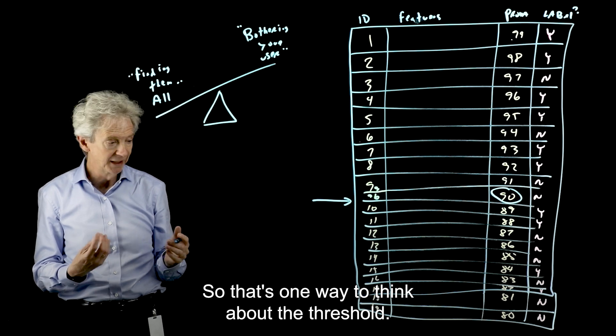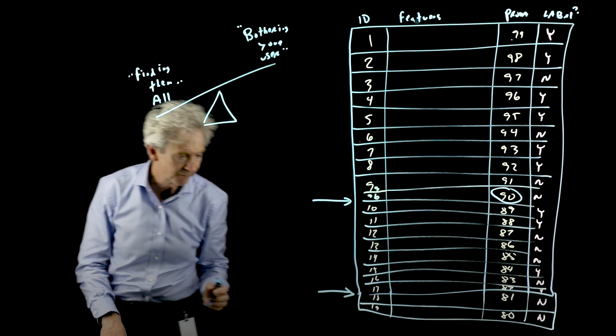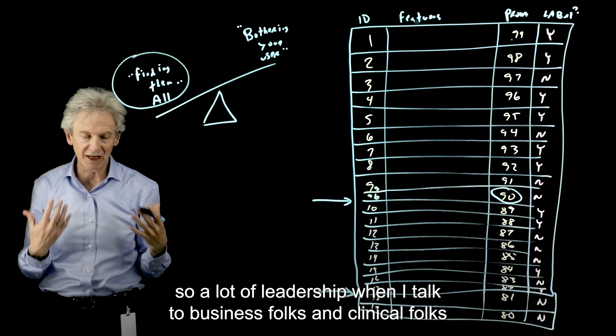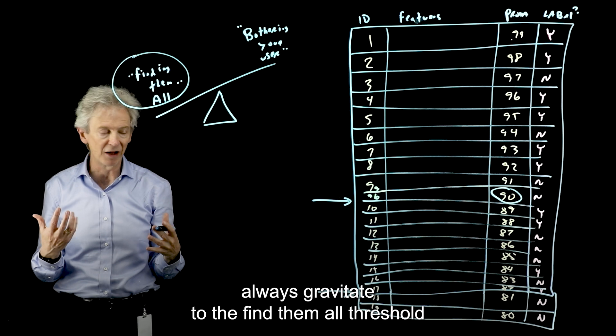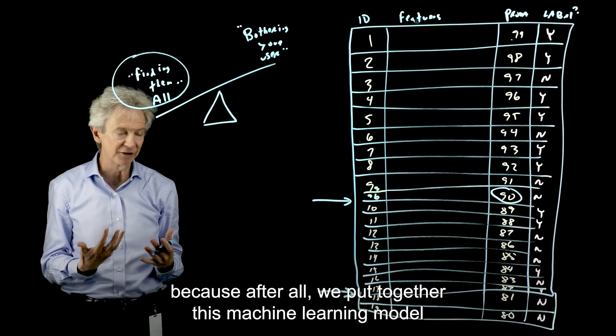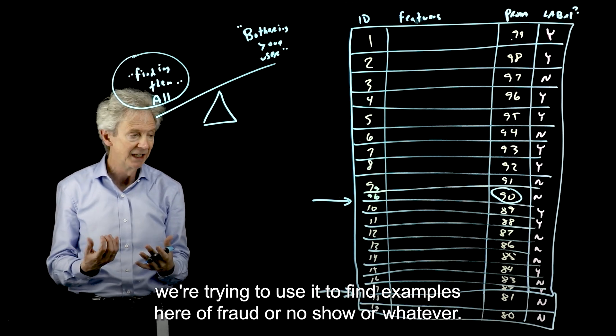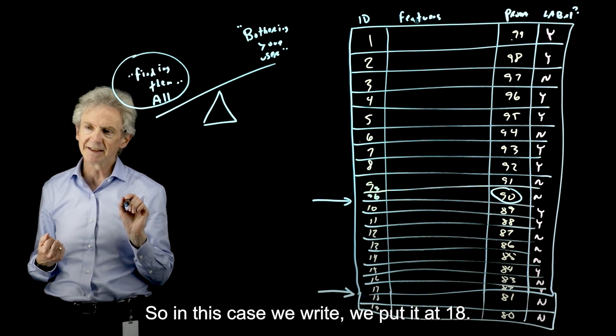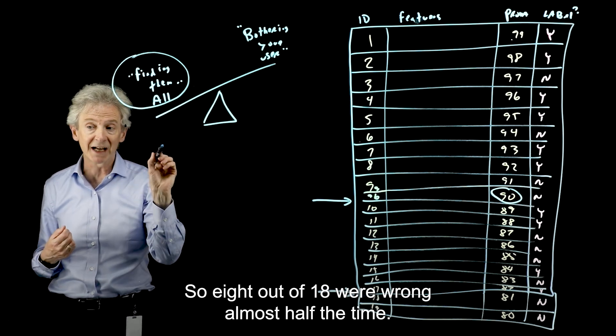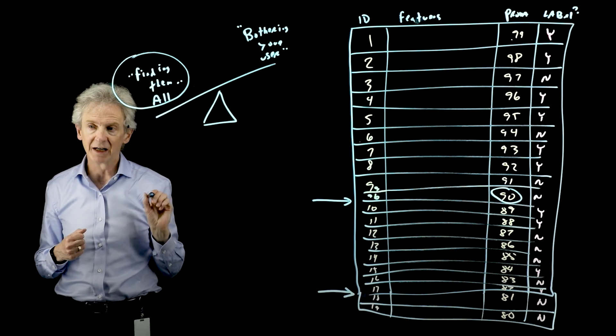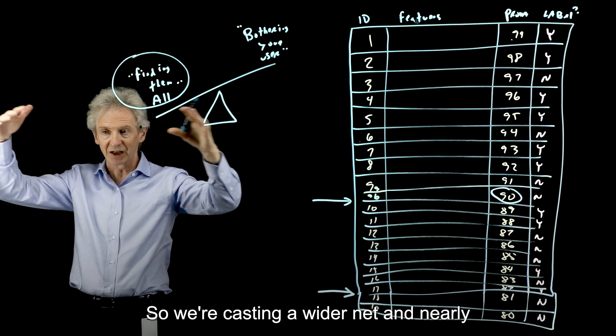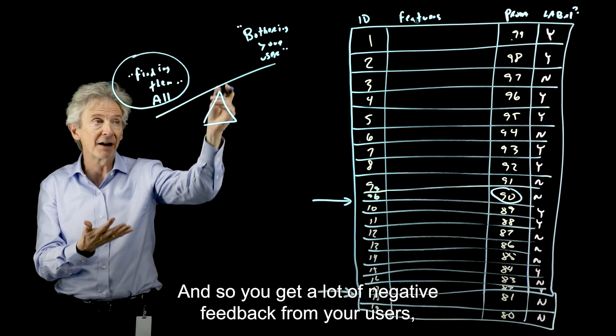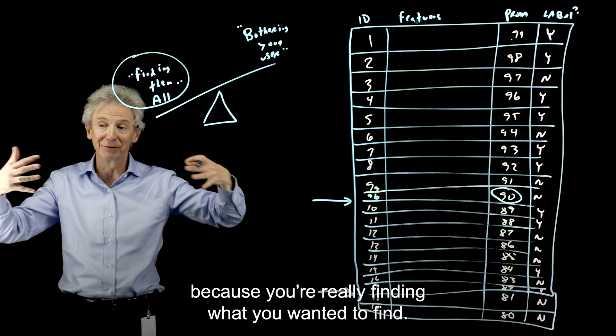So that's one way to think about the threshold. Another way to think about the threshold is down here. And this is the find them all desire. So a lot of leadership, when I talk to business folks and clinical folks, always gravitate to the find them all threshold. Because after all, we put together this machine learning model. We're trying to use it to find examples here of fraud or no-shows or whatever. Let's find them all. The problem with find them all is the amount of false positives. So in this case, we put it at 18. That means 10 were right, 8 were wrong. So 8 out of 18 were wrong almost half the time. So you're giving your users twice the work. There's only 10% urgent. But now we're guessing 18% are urgent. And so we're casting a wider net and nearly half of the model's experience is wrong. And so you get a lot of negative feedback from your users. But you get maybe positive feedback from leadership because you're really finding what you wanted to find.